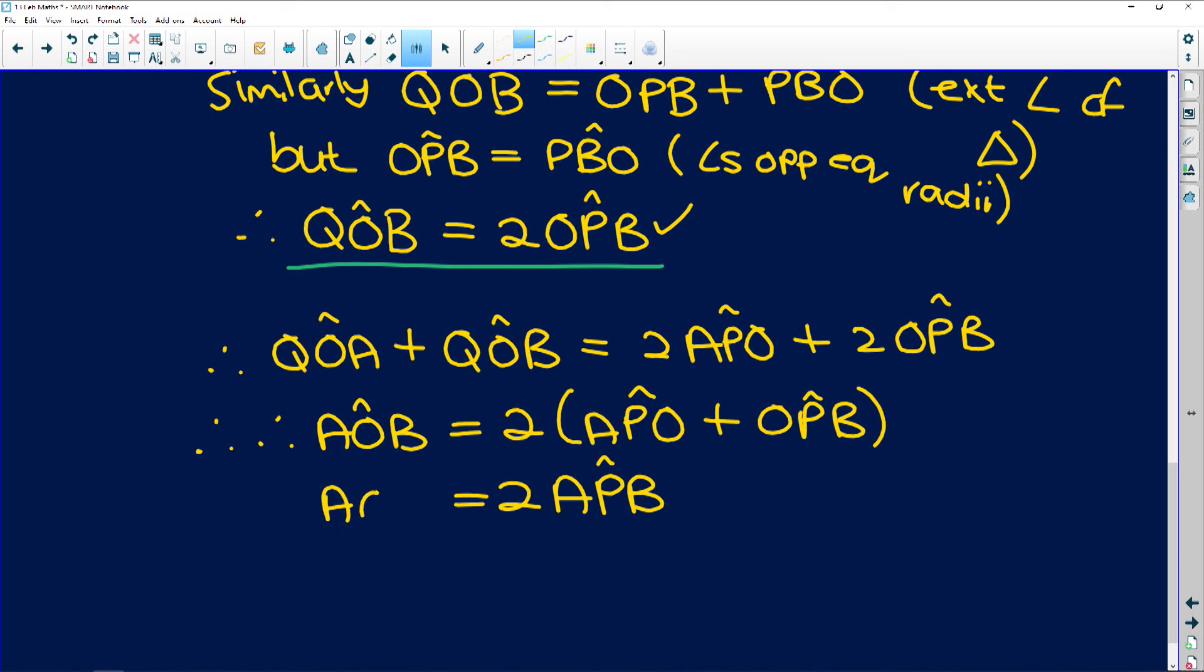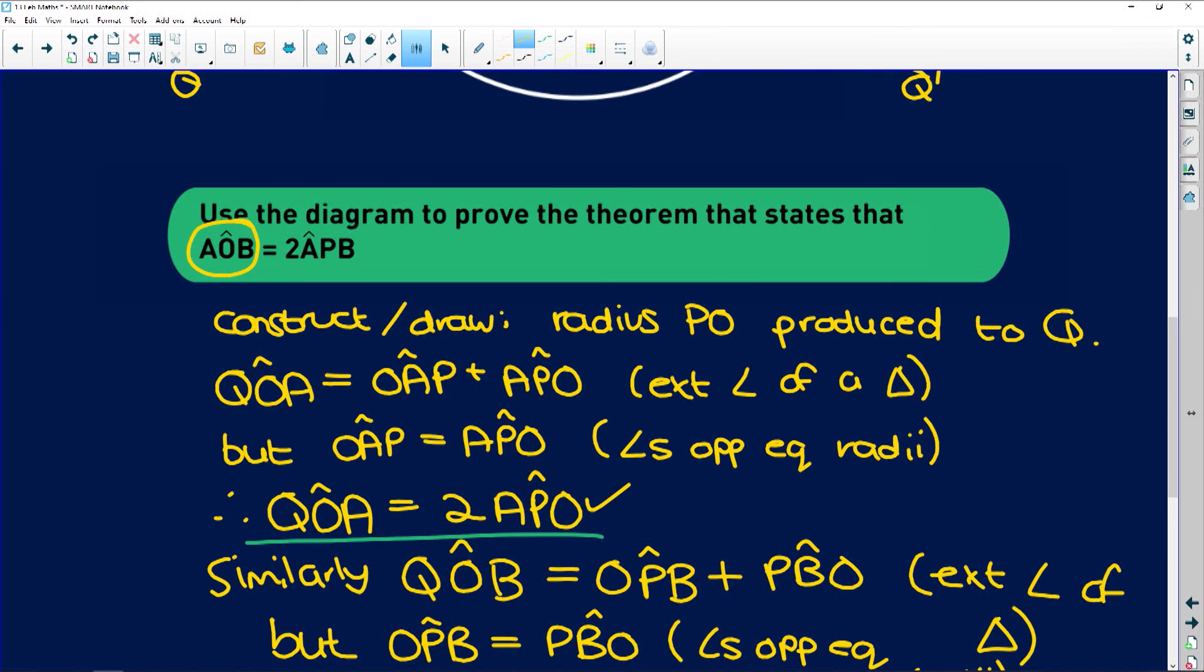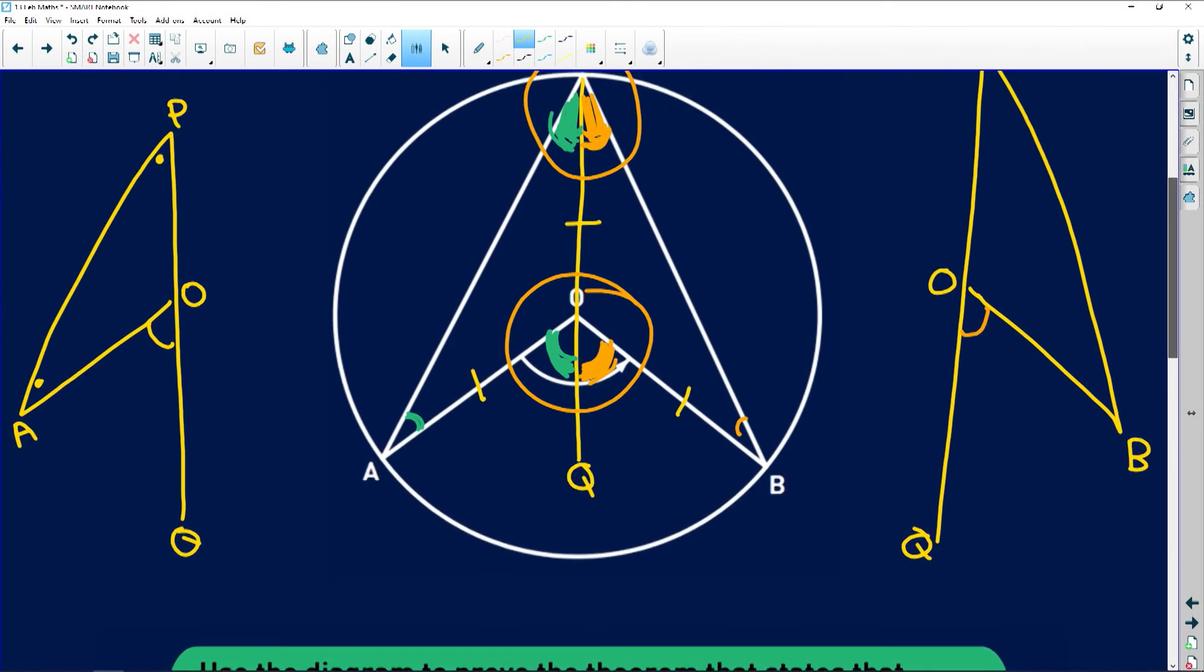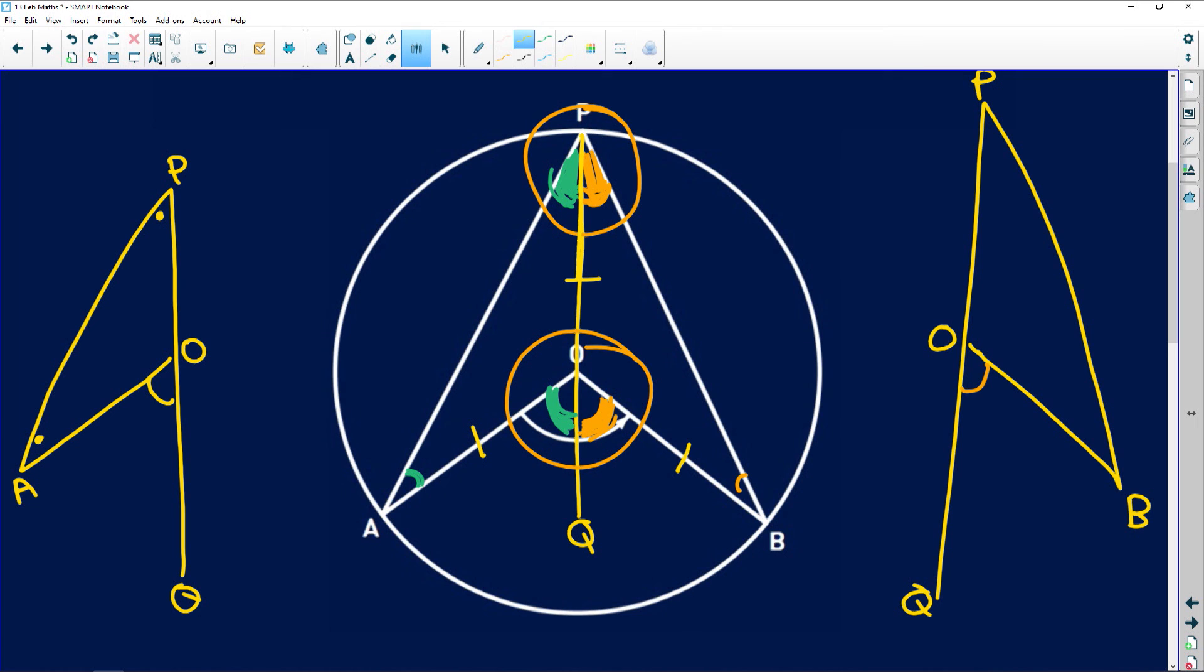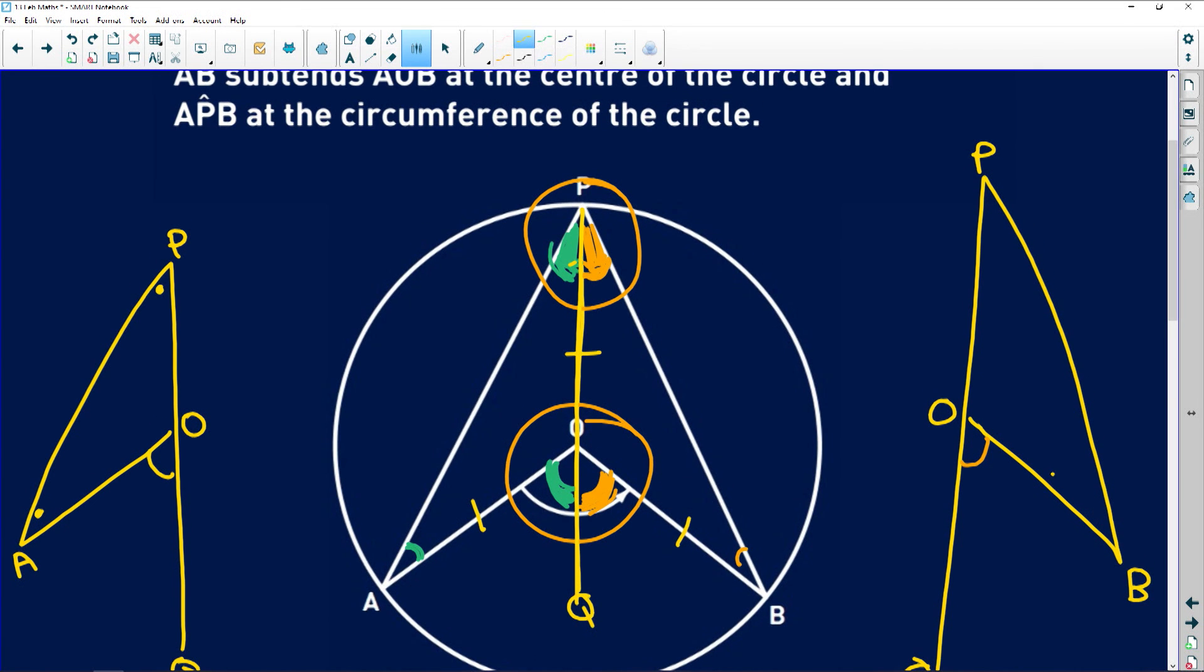That is exactly what we're required to prove. AOB is equal to twice APB. So remember guys, the first thing you need to do is draw in this extended radius. The moment you do that, you split angles and you're allowed to start working with them. And you established isosceles triangles that help you with those base angles.